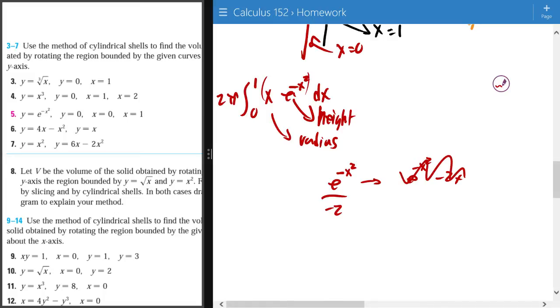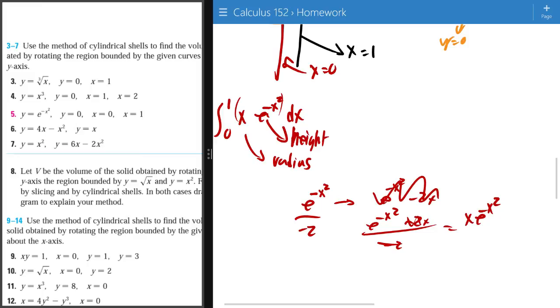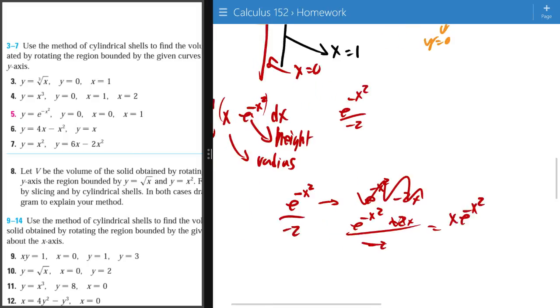So if I divide this by negative 2, I get e negative x squared times negative 2x over negative 2. This cancels out, which gets you x·e negative x squared. Cool, so that means that the integral is e negative x squared over negative 2.